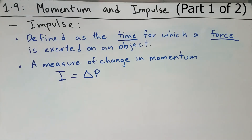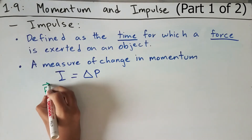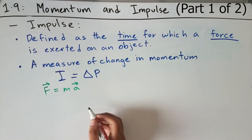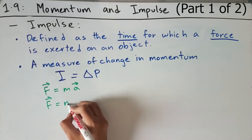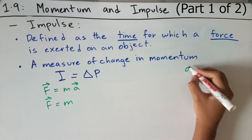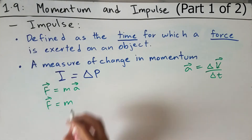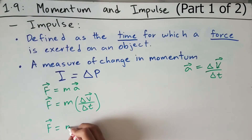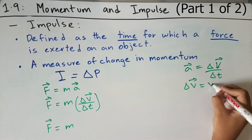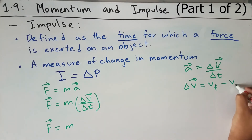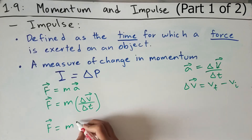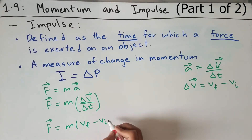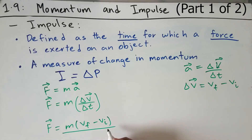So where does the formula I equals delta p come from? This formula is derived from Newton's second law of motion. We know that force equals mass times acceleration, and that acceleration is simply the change in velocity of an object over time. So we can replace acceleration with delta v over delta t, and the change in velocity equals final velocity minus initial velocity, all over delta t.